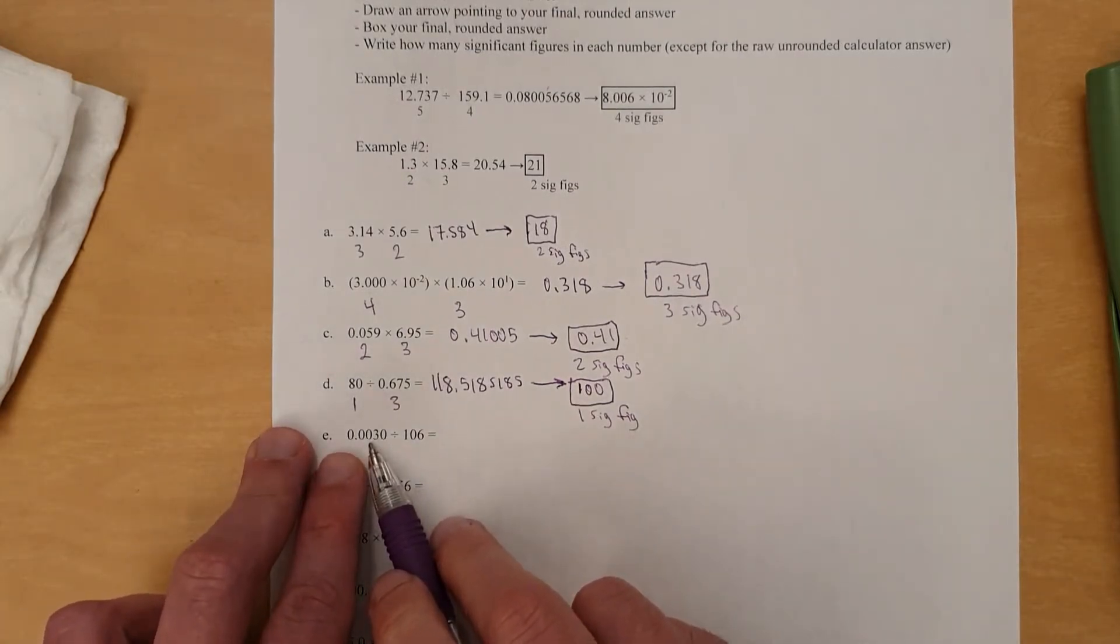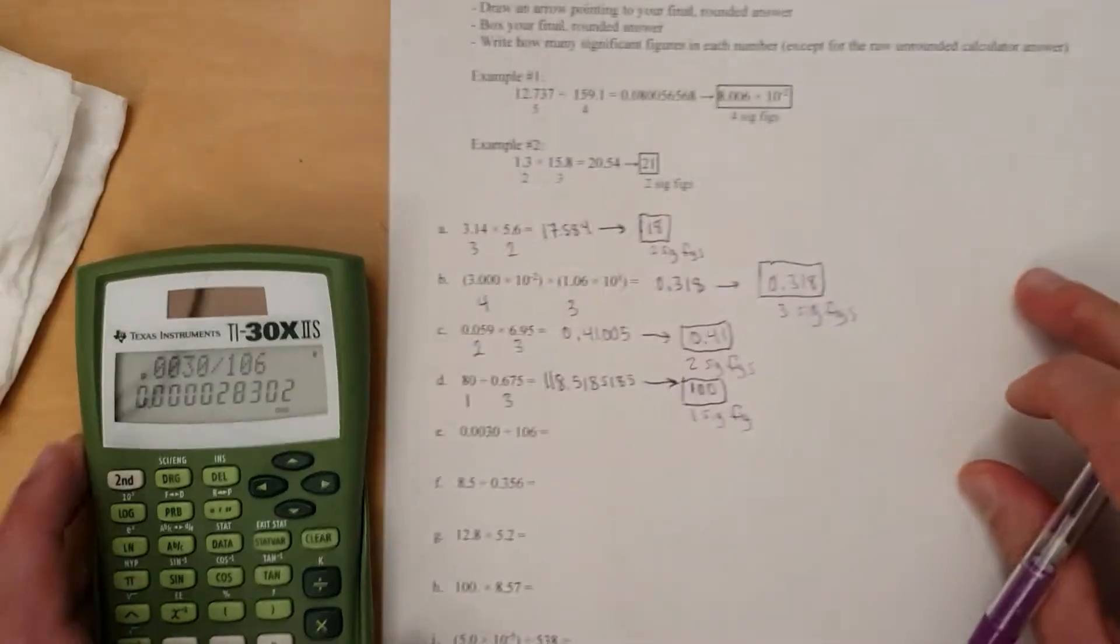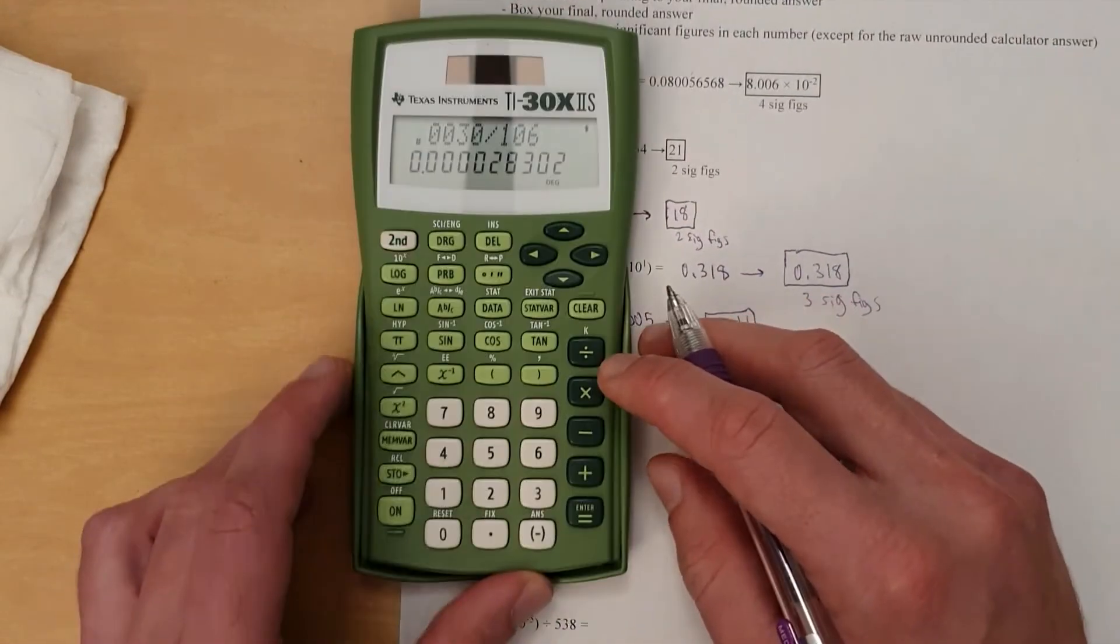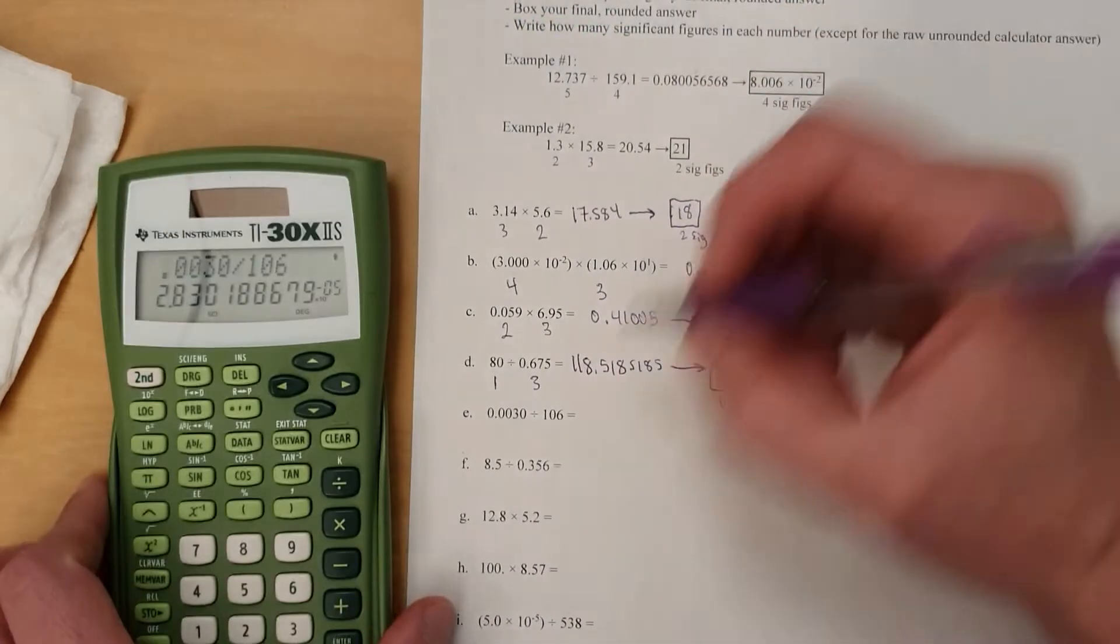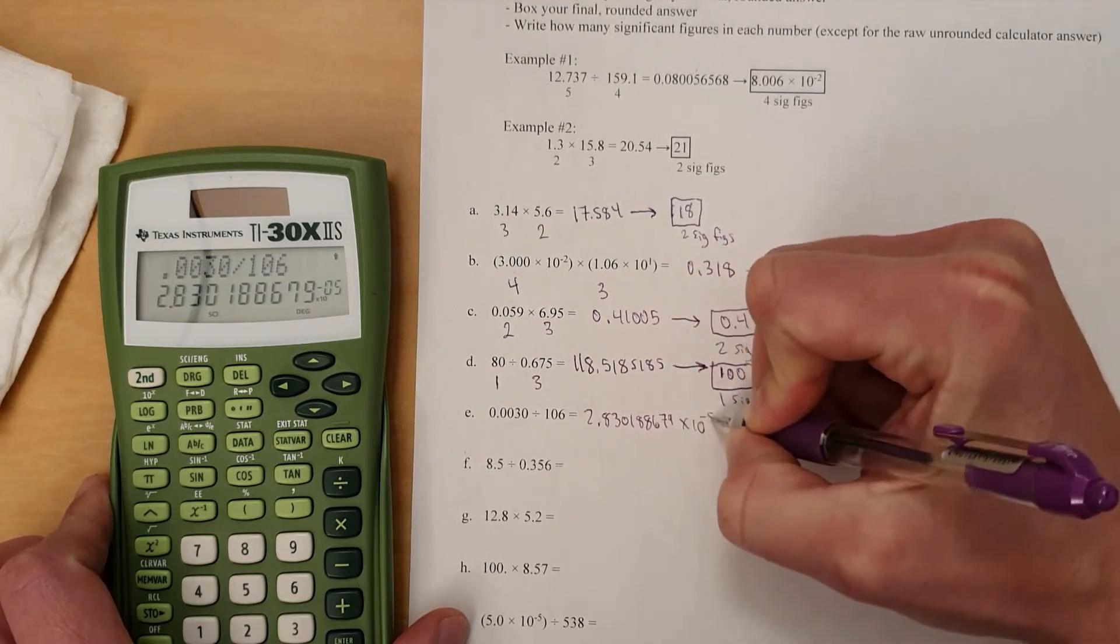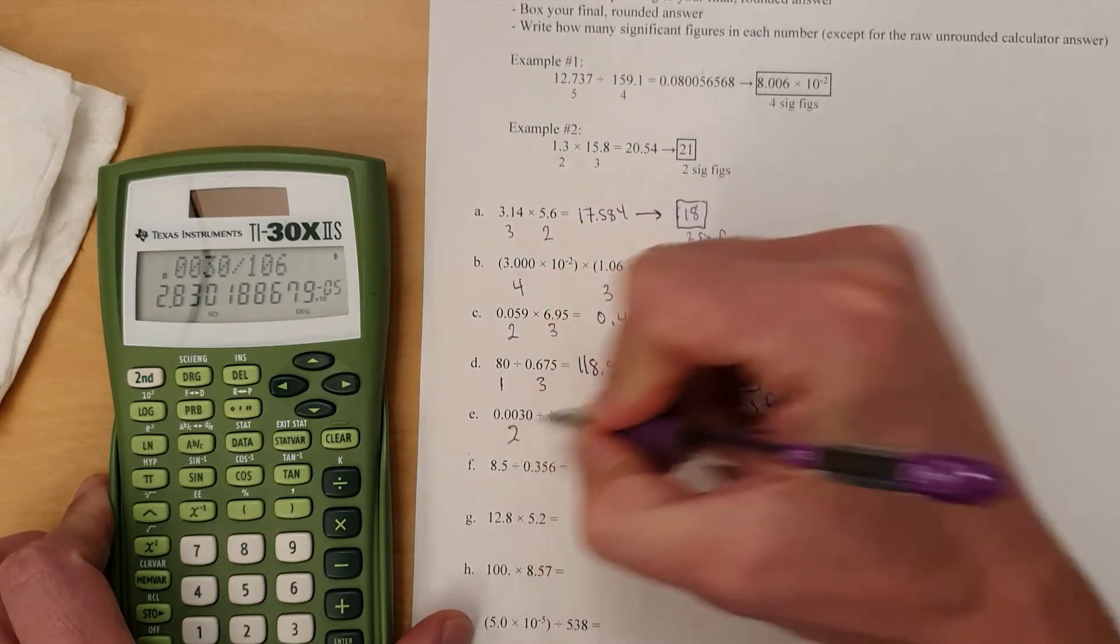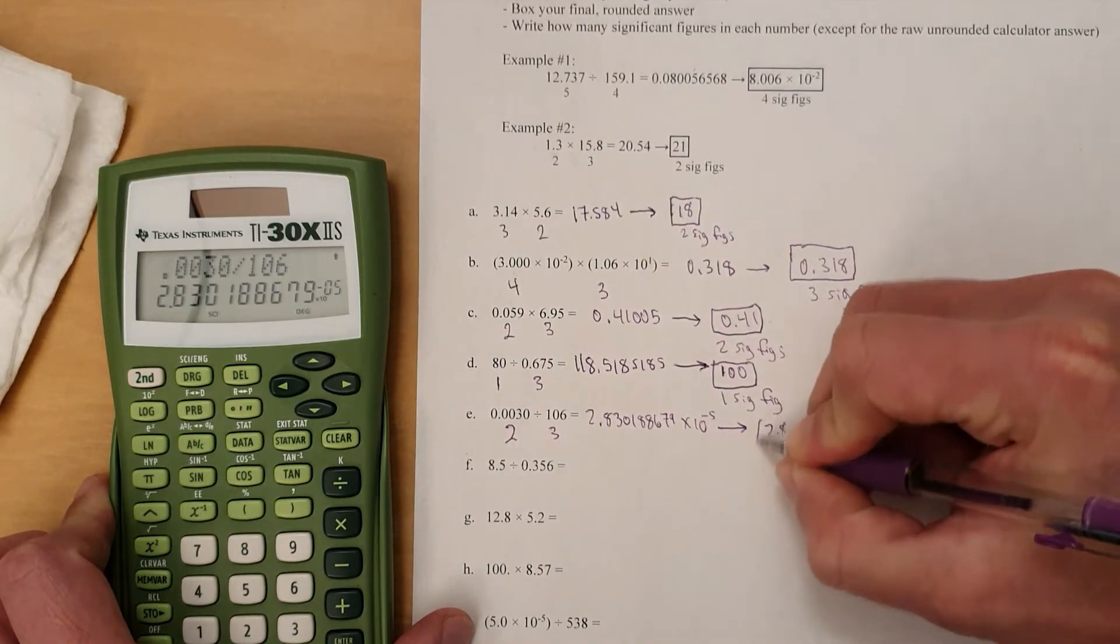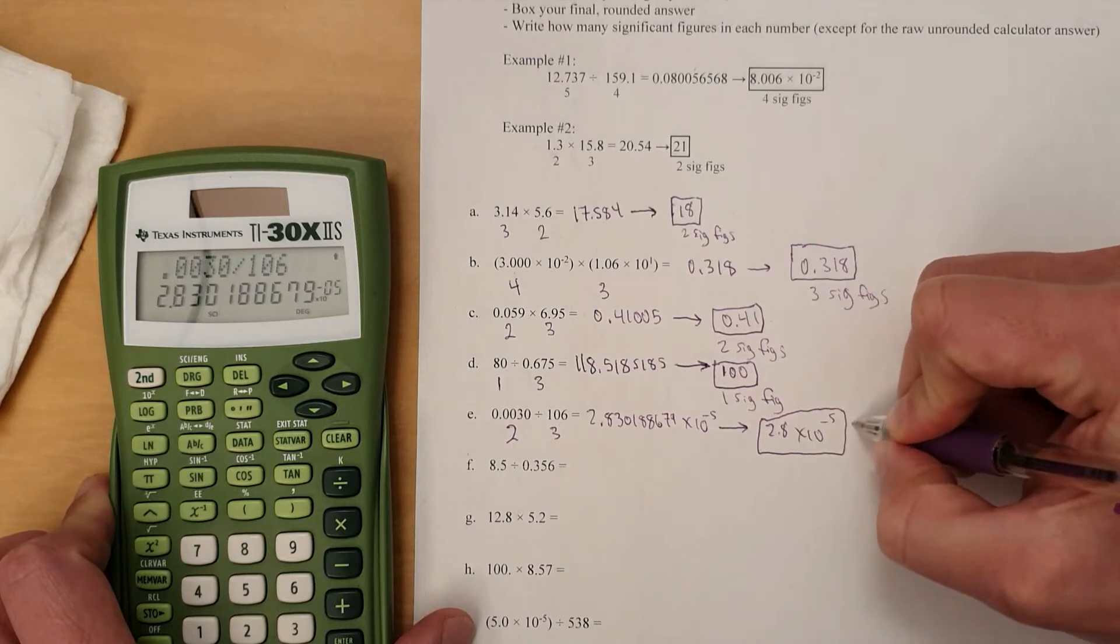All right, onward. 0.0030 divided by 106. All right, that's a super small number. You know what? It doesn't look good to have that many zeros. So, oh, let me show what I just did right there. Second function, sci-engineering, change to scientific mode. And then you have this now. So 2.830188679 times 10 to the negative fifth. So, okay, well, we're going to have to round that for sure. Two significant figures here. Three significant figures here. Round to two sig figs. That's 2.8 times 10 to the negative fifth. And that would be, let's see, I'm running out of room on the bottom. I'll just put it on the side. Two sig figs.